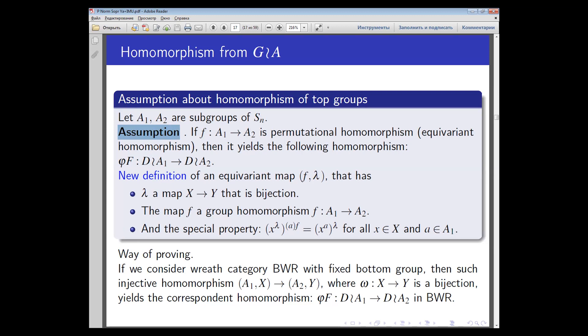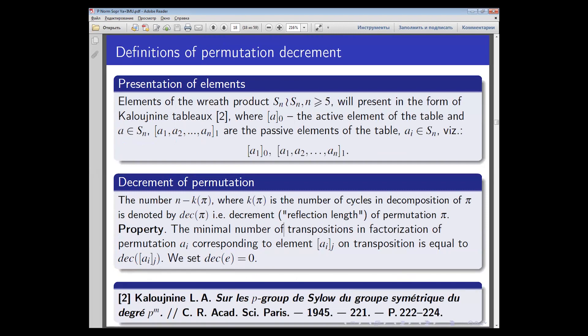Here A1 and A2 are the top groups. With a new definition which extends the current map, such a homomorphism exists if the following condition holds: the homomorphism commutes with the action. We can use tables of collusion and the notion of the decrement of a permutation. The decrement is the minimal number of cycles in the decomposition of P, denoted by decrement(P); in the English literature it is called the reflection length of a permutation.